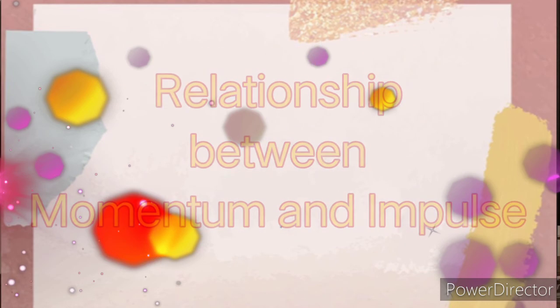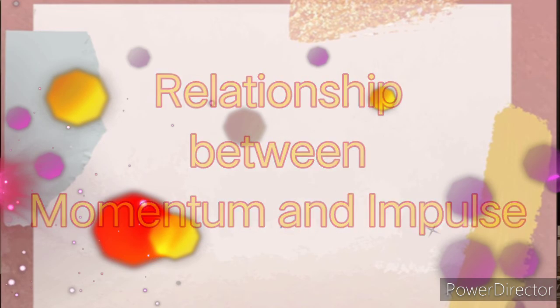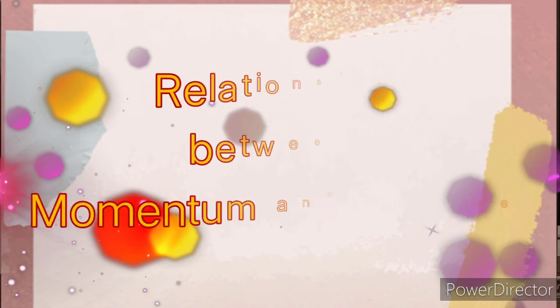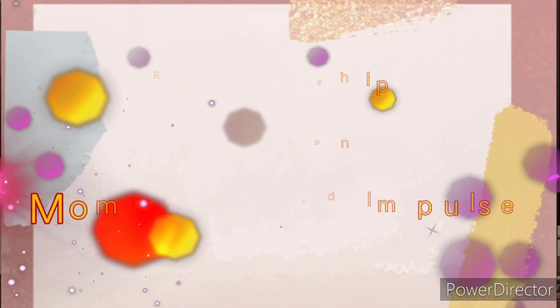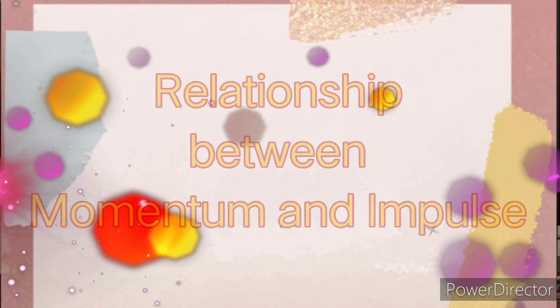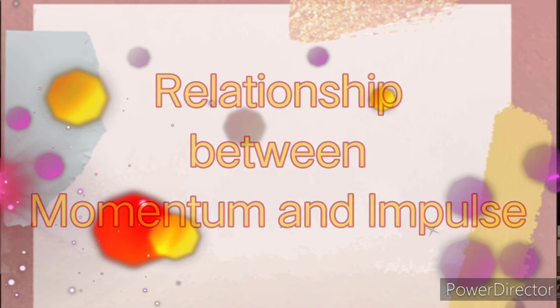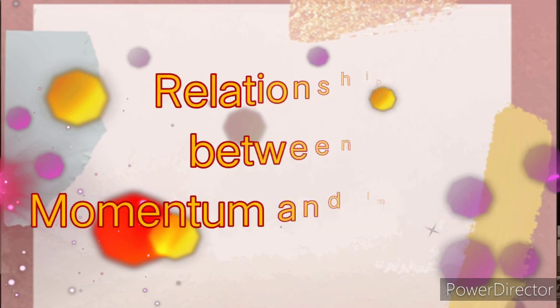Impulse and momentum have this relationship. It's just like a moving object or an object that is at rest. You need to exert a force in order for it to move or to stop. If it is moving, you need to exert a force to stop it. If it is in rest position, you need to exert a force in order for it to move. That's why the force there refers to the impulse, and the movement of the object refers to the momentum.